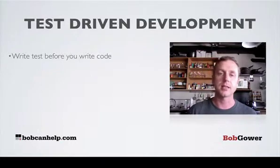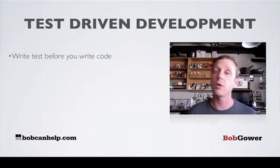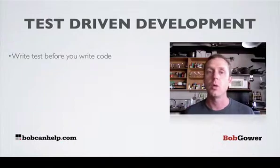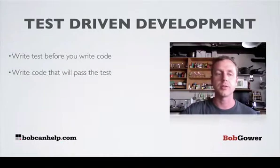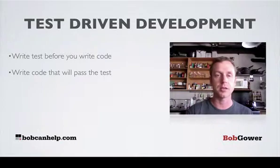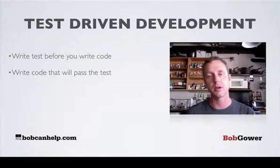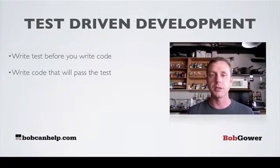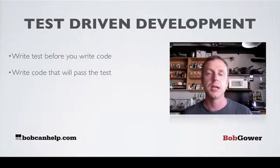If you write the test up front before you write the code, then you also know when you're finished — when the code is finished. You write the code that will pass the test. So you write the automated test, then you write the code that will pass the test. You build automated testing into your code production.